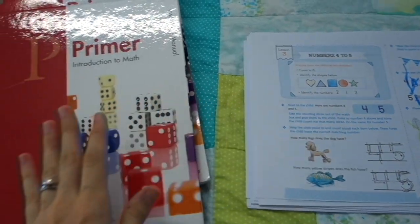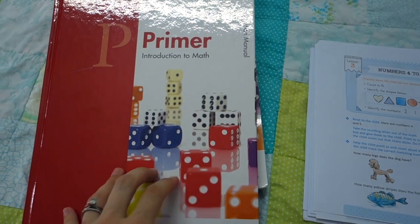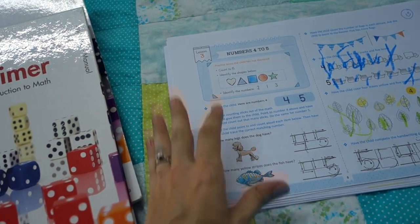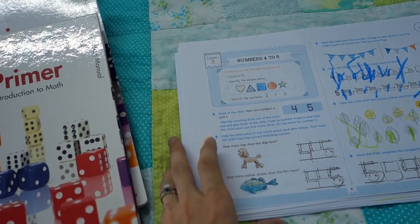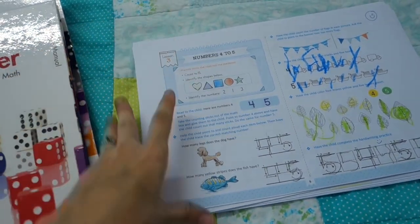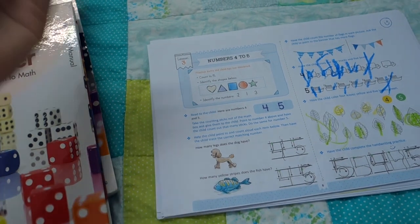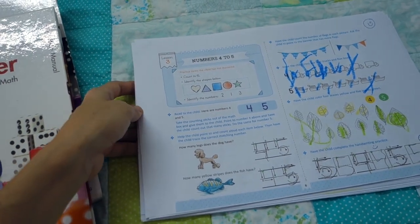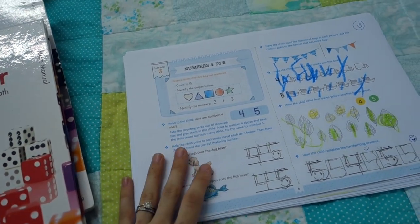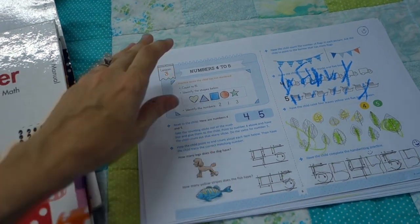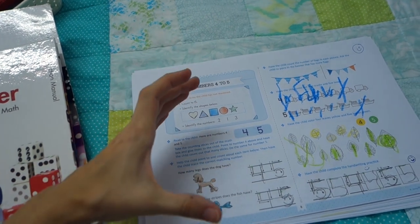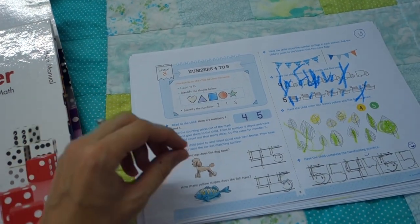All right, so these are the two curriculums that I'm going to be comparing. I will just start off by pointing out that the Good and the Beautiful option, Simply Math, is less expensive. All that you need for this curriculum is the student book, which you can purchase in a hard copy or you can purchase a PDF. And I believe they will soon be making it free actually as a PDF, but it is already quite inexpensive in PDF format. And they also have a math box that you can purchase with physical manipulatives.